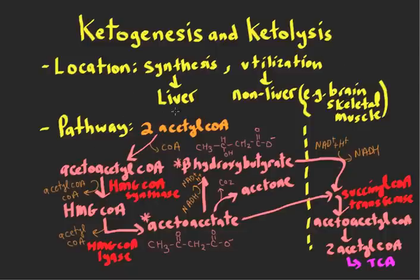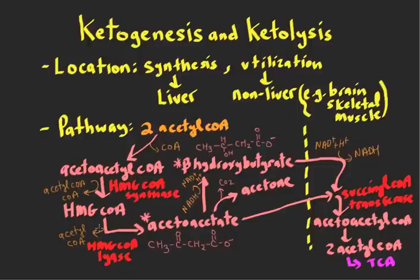For the pathway, we're going to be using acetyl-CoA as our ingredient. We take two of them, condense them together, release a CoA, and form acetoacetyl-CoA. If we add another acetyl-CoA and condense it with the acetoacetyl-CoA and release a CoA, we end up with a molecule called HMG-CoA. The enzyme responsible for making HMG-CoA is HMG-CoA synthase. If we lyse and cleave off an acetyl-CoA, we form acetoacetate, which is one of our important ketone bodies.